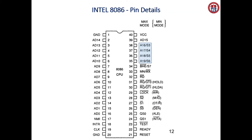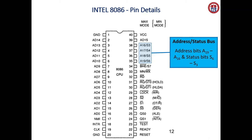The next signal covers A16 to A19 and S3 to S6. This is the address or status signal. During the first clock cycle, these pins act as address lines A16 to A19. From the second clock cycle onwards, they act as status bits S3 to S6. So during the first clock cycle they carry address information, and from the second clock cycle onwards they carry status information.